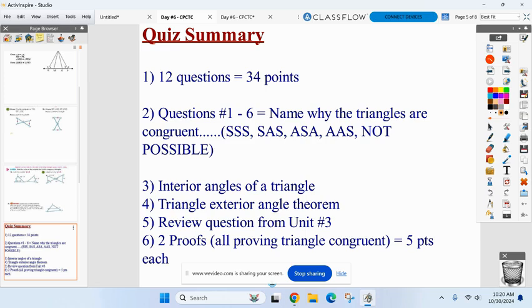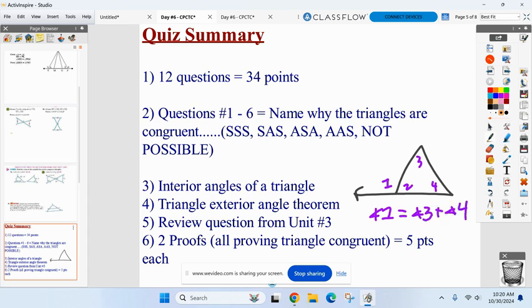Interior angles of a triangle, that's basically all the three angles added to 180. Triangle exterior angle theorem. Here's what I'm talking about. Here's my exterior angle right here at one, and I have angle two, three, and four. What's angle one equal to? What did we go over as far as the theorem, Connor? Angle three plus angle four. The two remote interior angles added together.